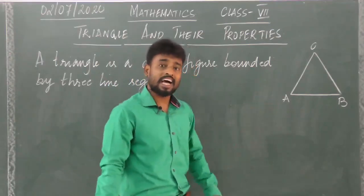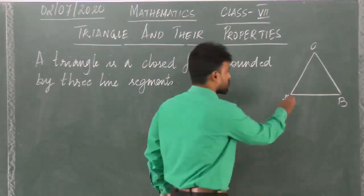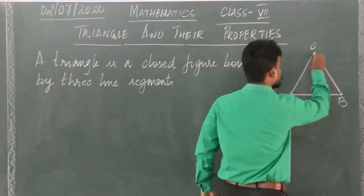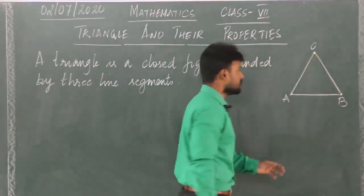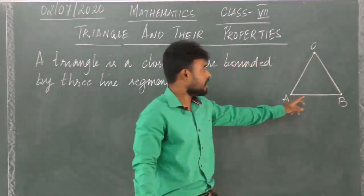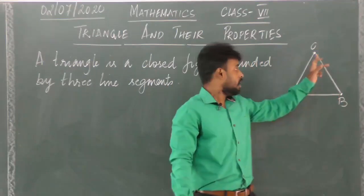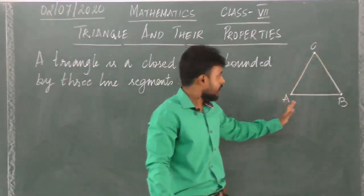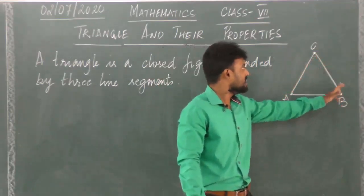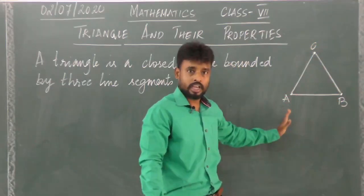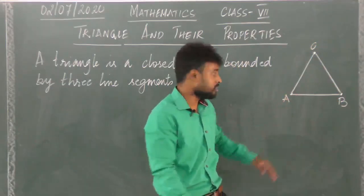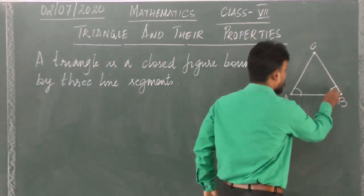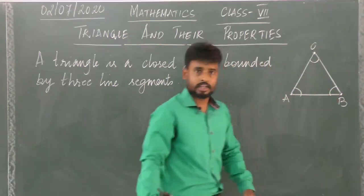A triangle has three vertices. These are the vertices A, B, and C. A triangle has three sides: AB, BC, and CA. It has three angles: angle A, angle B, and angle C.